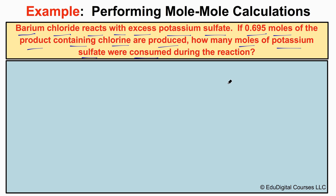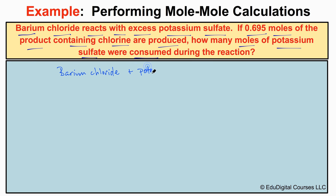Before we can begin this problem, we have to come up with a correctly written chemical reaction equation. Reading the question, it tells us that barium chloride is reacting with excess potassium sulfate. So barium chloride is one reactant, and potassium sulfate is the other reactant. We need to figure out what the products are going to be.